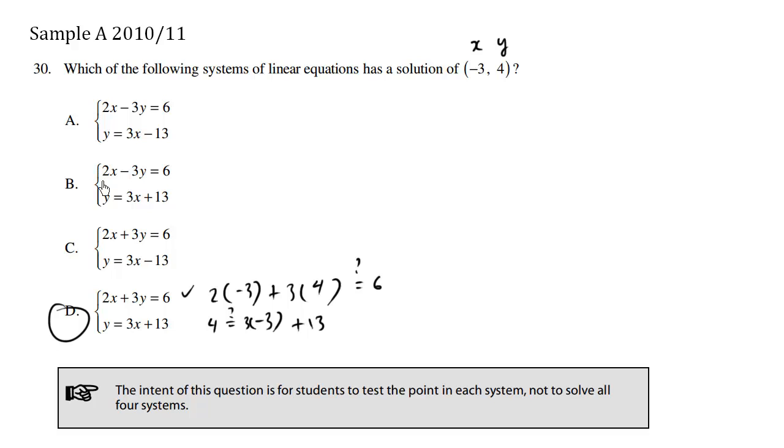For choices A, B, and C, left side will not equal right side for both of these line equations.